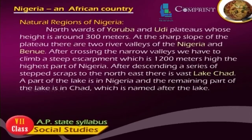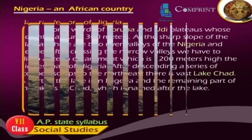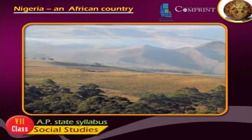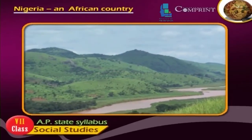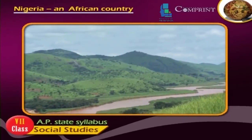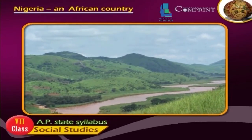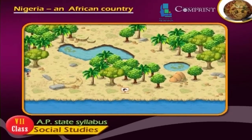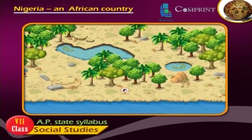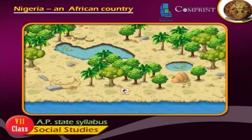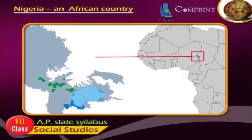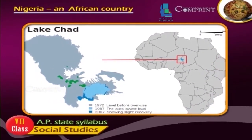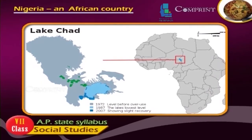Natural regions of Nigeria. Northwards of the Yoruba and Udi plateaus, whose height is around 300 meters, at the sharp slope of the plateau, there are two river valleys of the Niger and Benue. After crossing the narrow valleys, we have to climb a steep escarpment which is 1,200 meters high — the highest part of Nigeria. After descending to the northeast, there is a vast lake, Chad. A part of the lake is in Nigeria and the remaining part is in Chad, which is named after the lake.